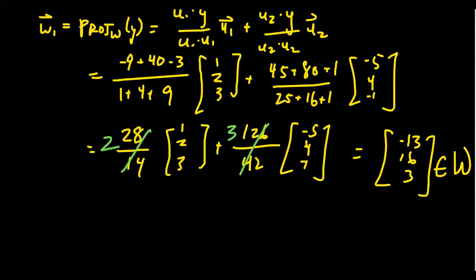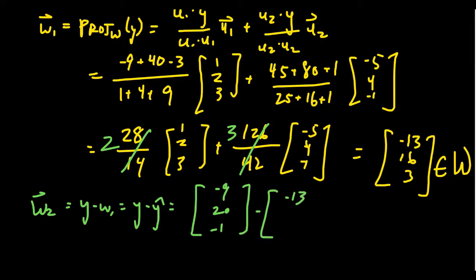The next one, if you want to calculate w2, it's a whole lot easier to do. We just have to take y minus w1, that is y minus y hat right here. So recall that y, I can't see on the screen anymore, y was just going to be [-9, 20, -1]. Y hat, which we can see right here, we're going to subtract from that [-13, 16, 3]. And so that adds up to just be [4, 4, -4], like so.